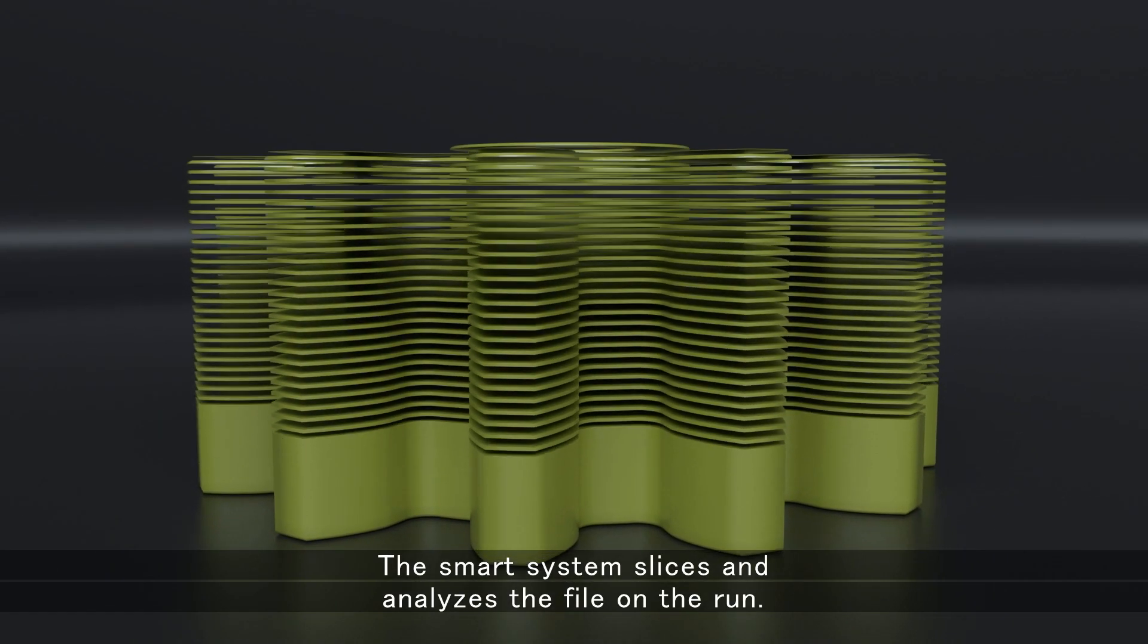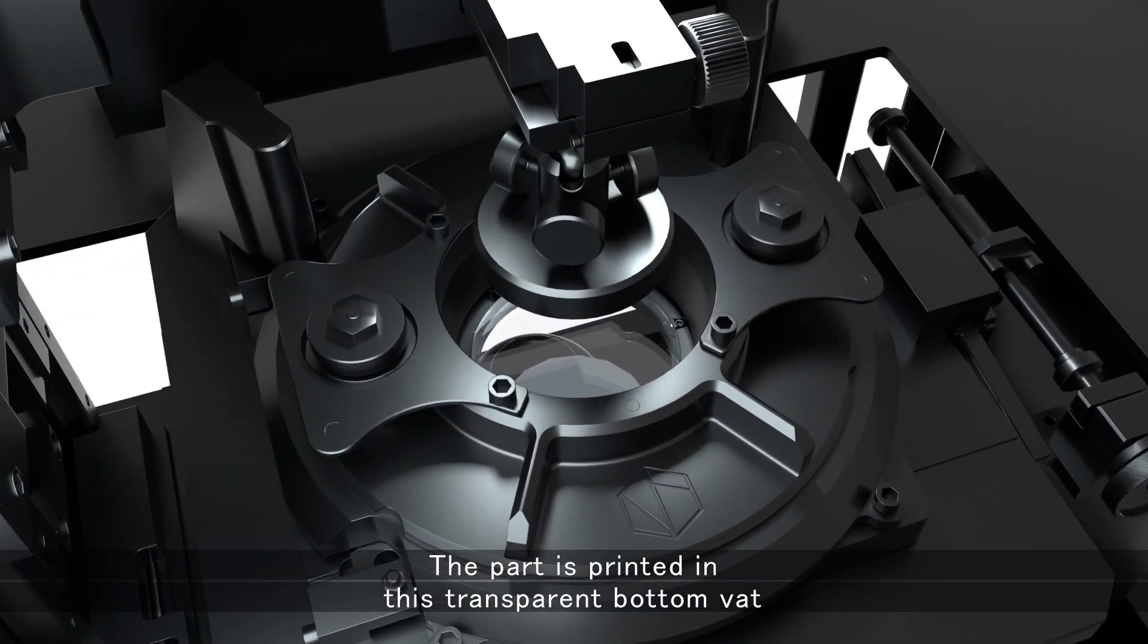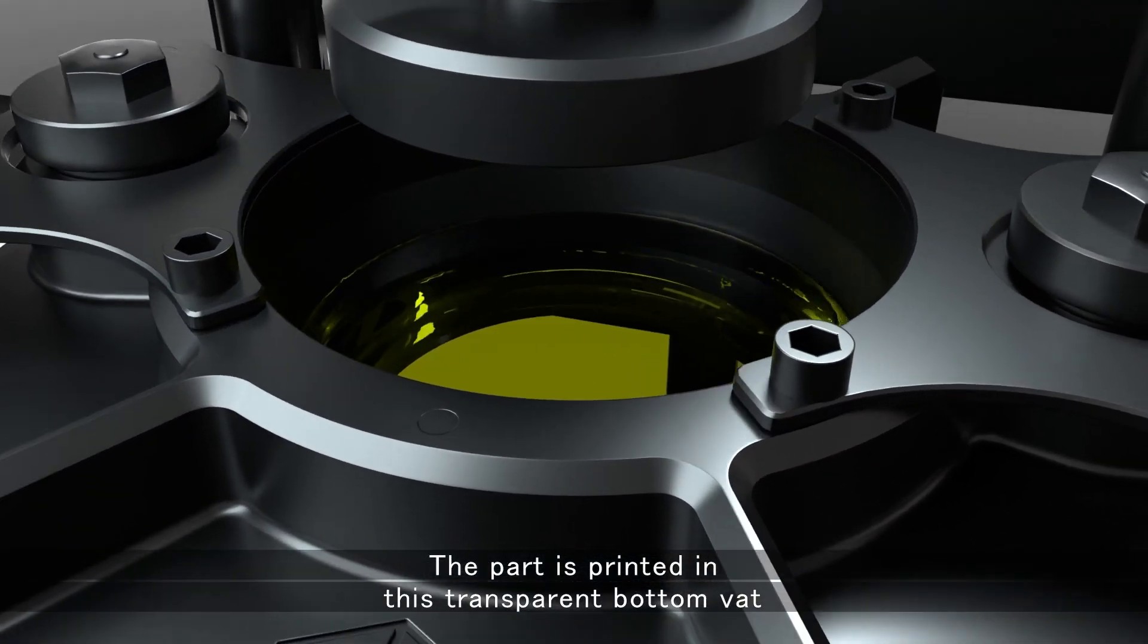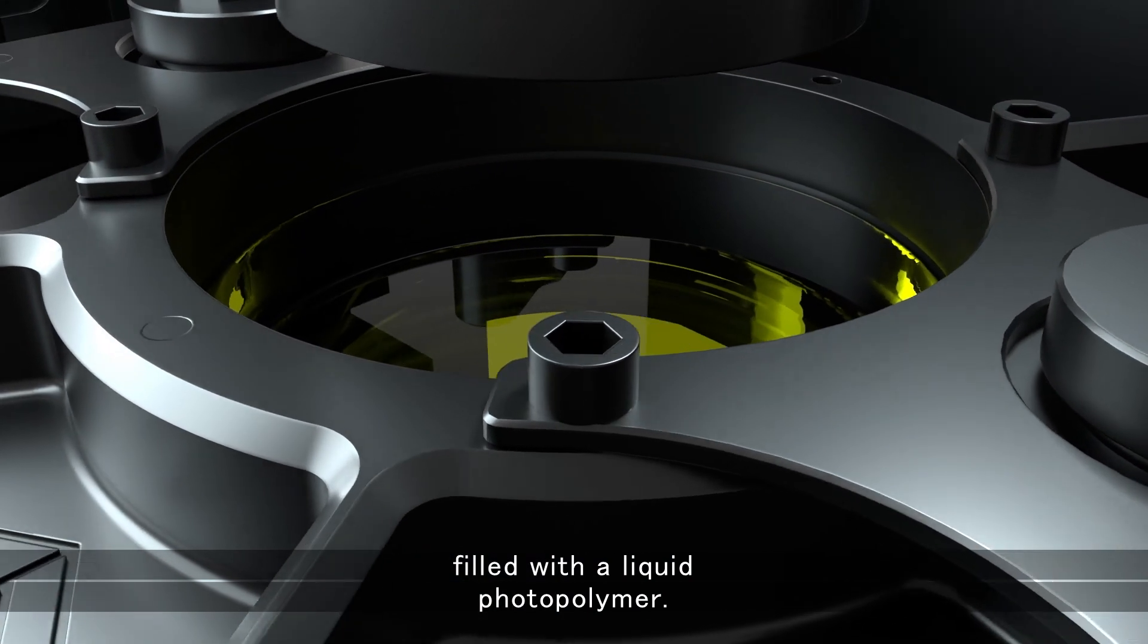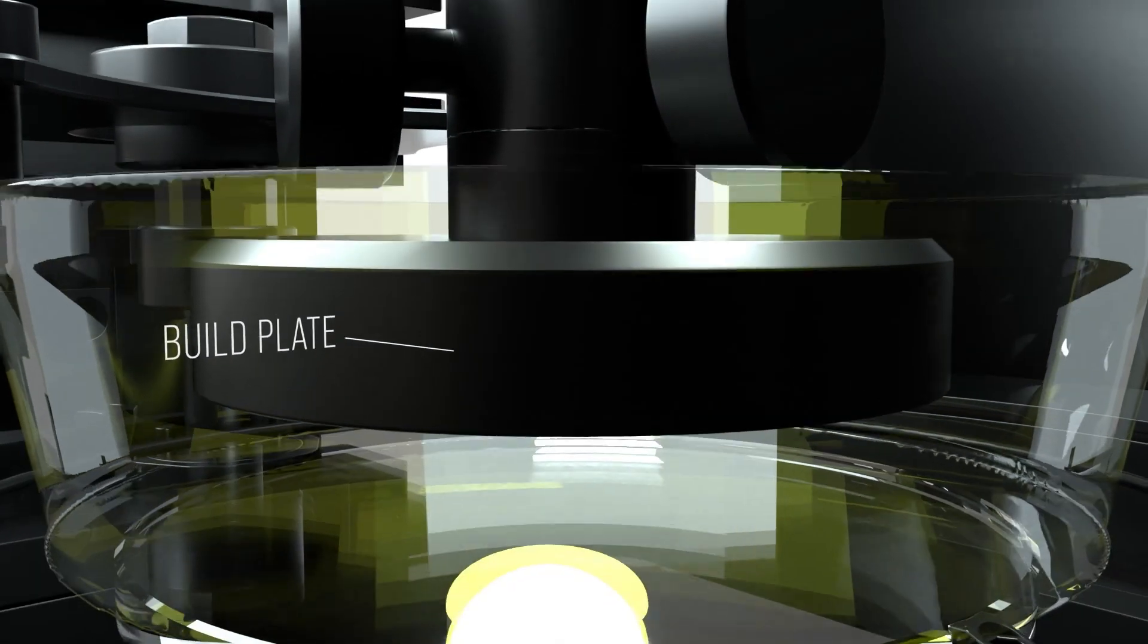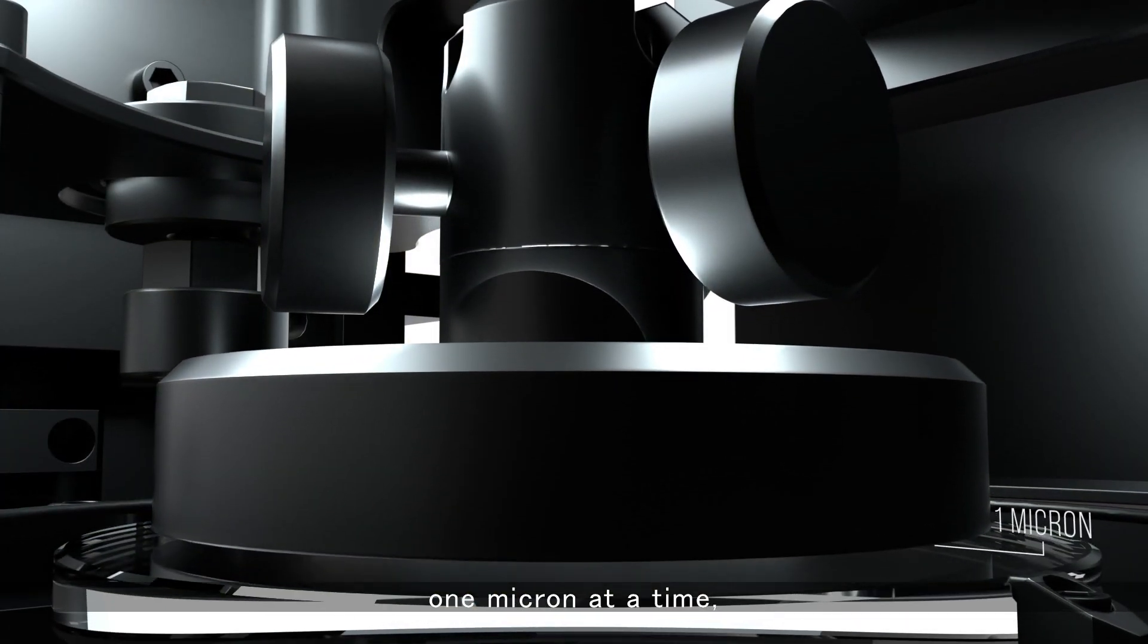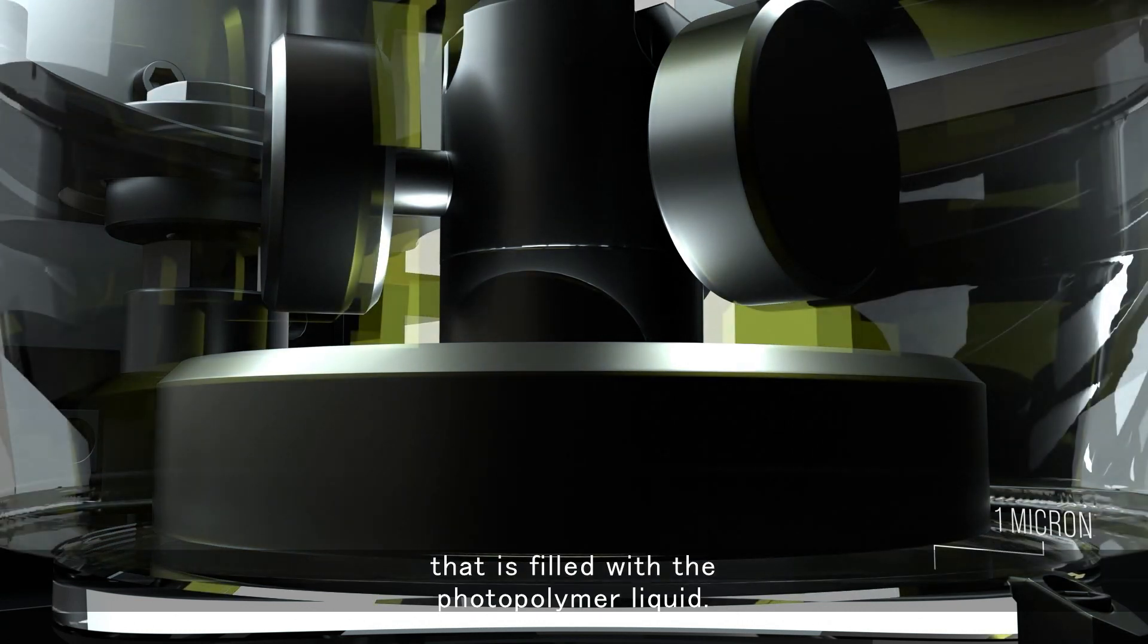The smart system slices and analyzes the file on the run. The part is printed in this transparent bottom vat filled with a liquid photopolymer. A 50 millimeter build plate is inserted into the vat all the way to the bottom and moves up one micron at a time, creating a one micron gap that is filled with the photopolymer liquid.